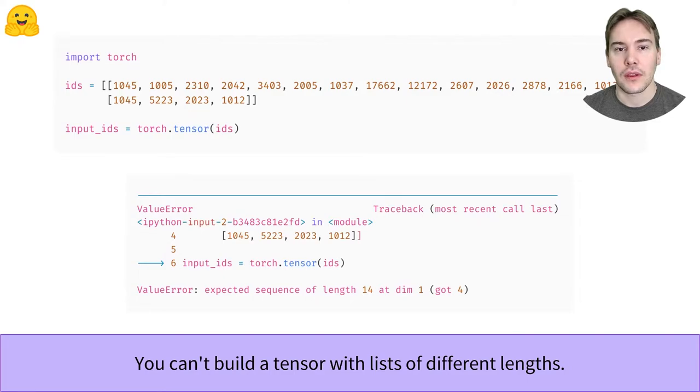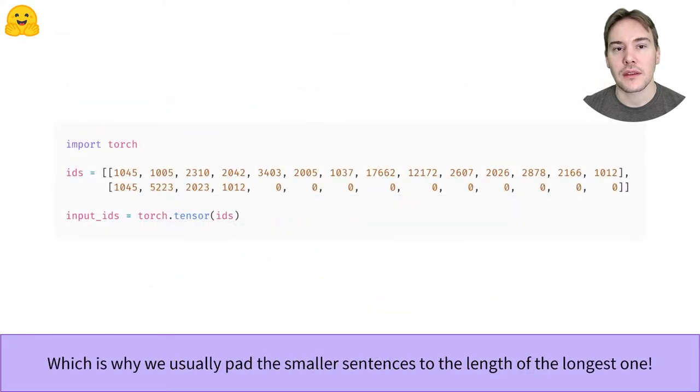One way to overcome this limit is to make the second sentence the same length as the first by adding a special token as many times as necessary. Another way would be to truncate the first sequence to the length of the second, but we would then lose a lot of information that might be necessary to properly classify the sentence.